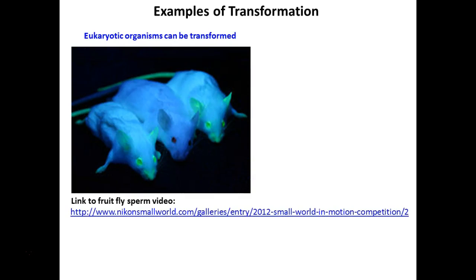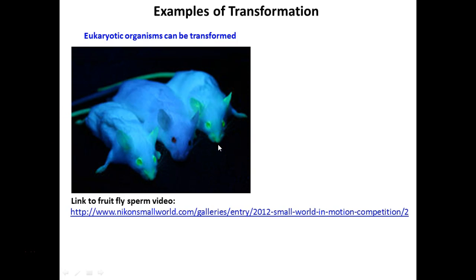Transformation is where you're adding DNA to an organism and changing their characteristics — you're literally transforming them. Take these three mice: their eyes, ears, nose, and even tails are glowing fluorescent green. The reason is that they were given the DNA instructions to make green fluorescent protein, which is what we're working with today. This allows them to fluoresce green when exposed to UV light.